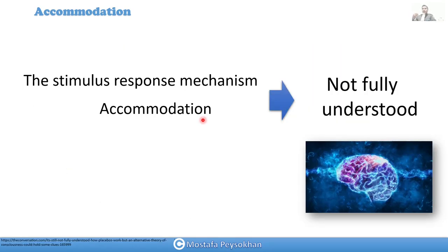So the process of accommodation, for example, when you're looking at an object that is close to your eyes, when you look at the object that is far from you, it happens in less than one second. Our brain understands that okay, for this object that is close to me, I need to accommodate, and for the object that is far I need to be relaxed. That process, the stimulus response mechanism of accommodation, is still unknown to us.